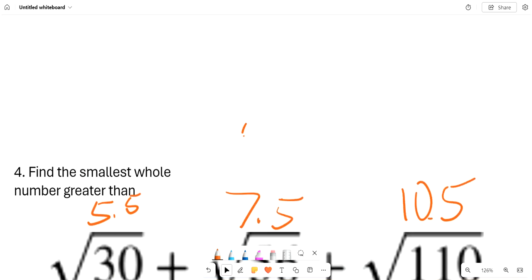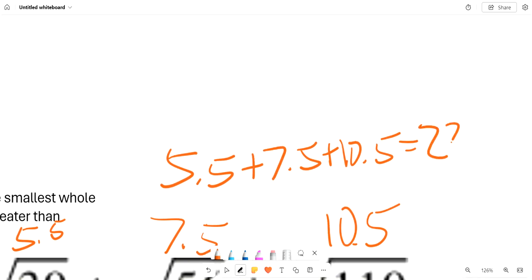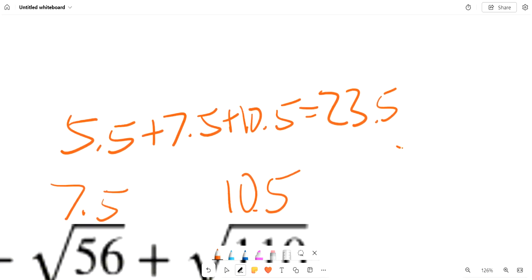So we just add these up and we get 5.5 plus 7.5 plus 10.5 is equal to 23.5. And the smallest whole number greater than that is 24. So the answer is 24.